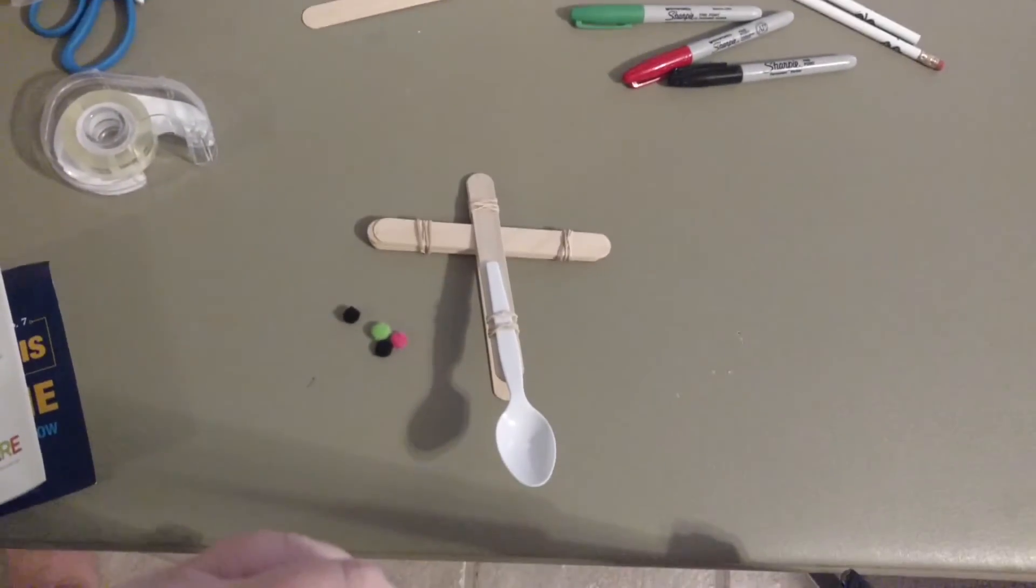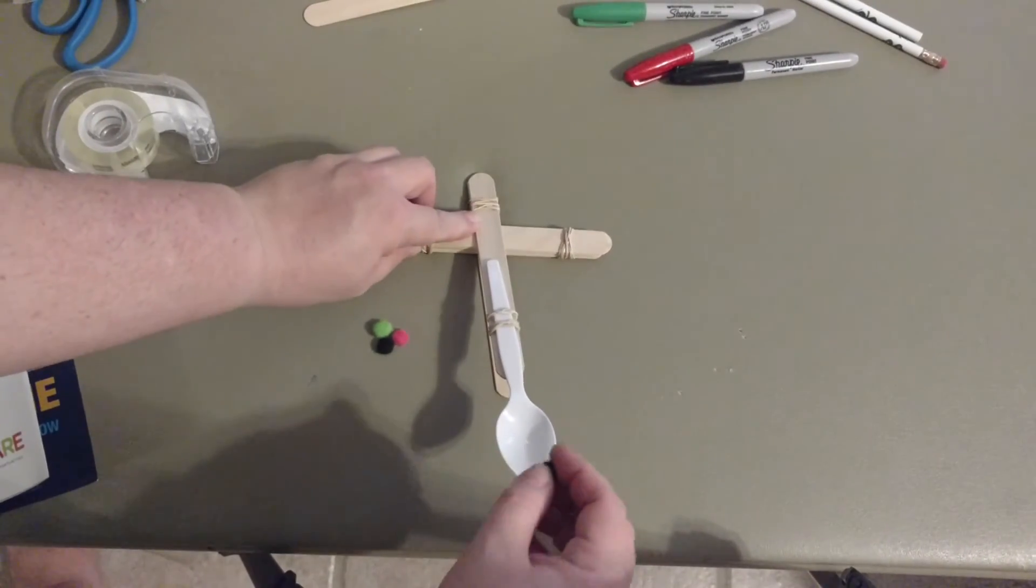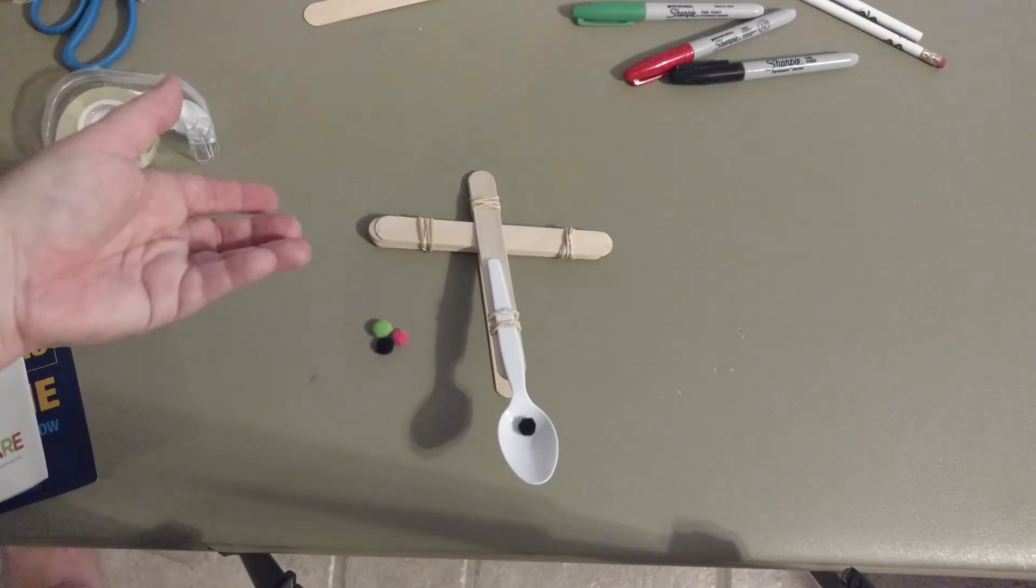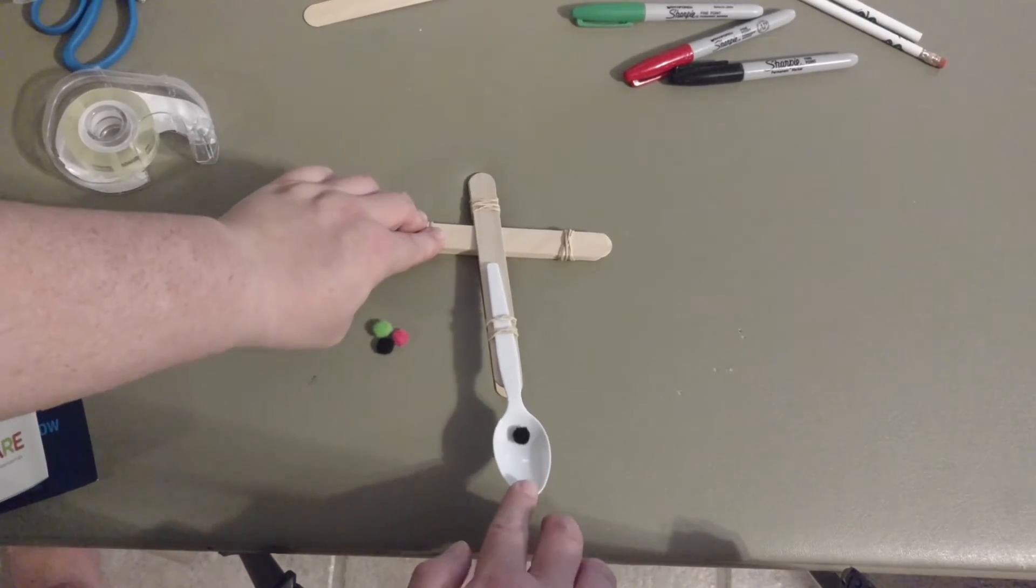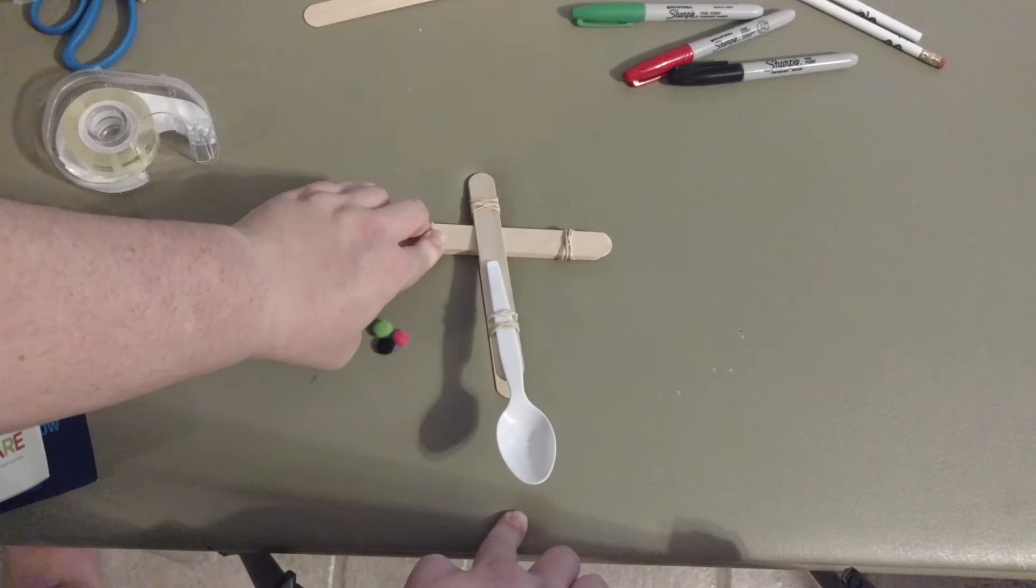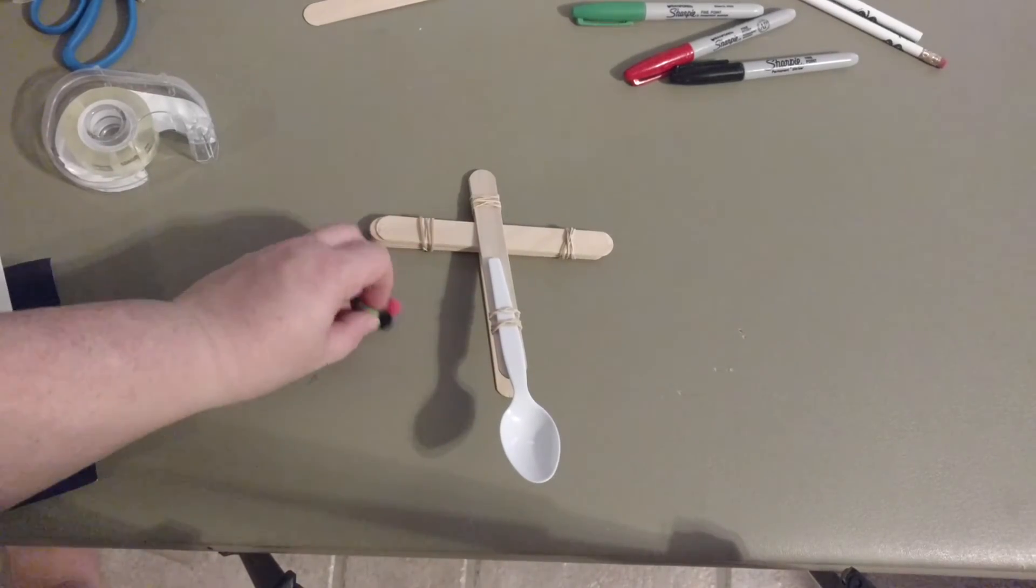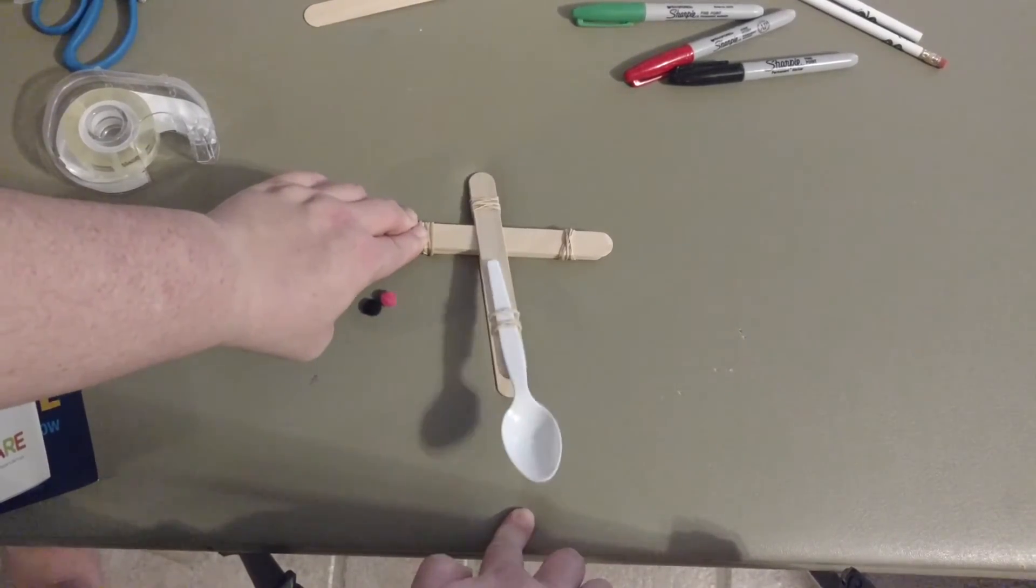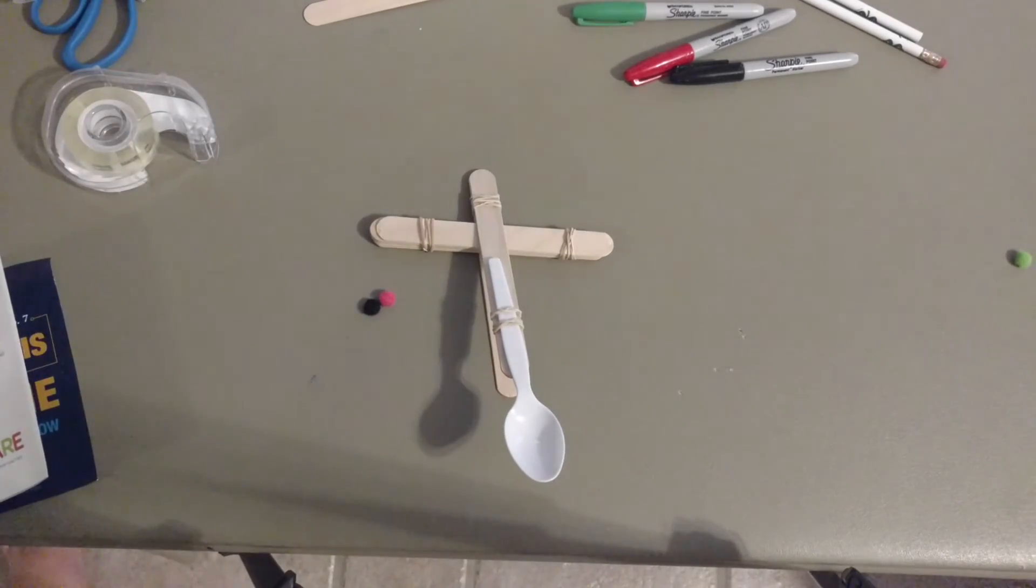Let me show you what it looks like when I launch. I'm going to hold on to my sticks because I don't want my catapult to go flying. Then I'm going to press down on my spoon and let go. If you saw the little pom-pom bounce out of there, let's see if we can catch another one. So we've got good launch.